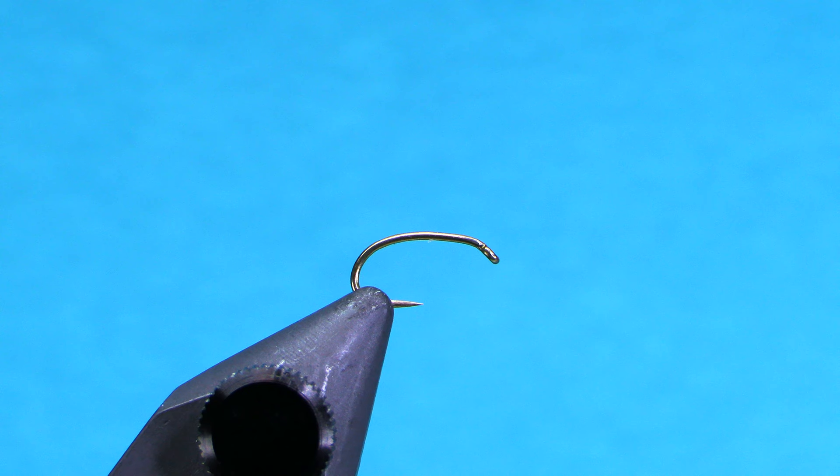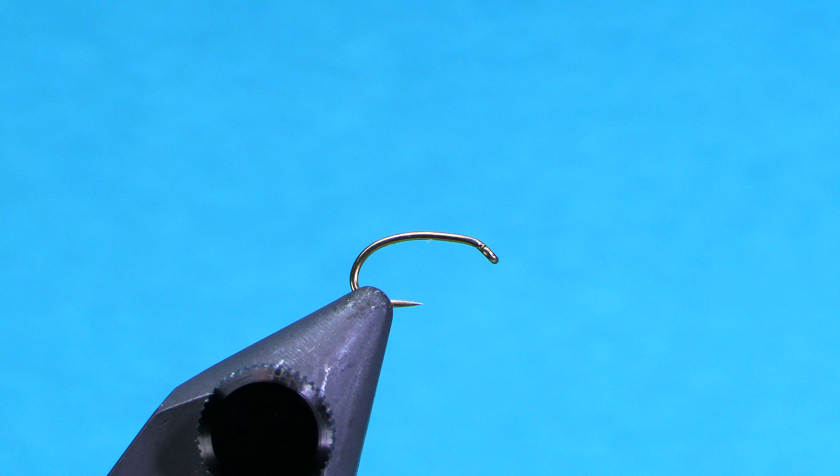Hey, this is Hans from Dakota Angler and Outfitter, and today we're going to tie a fly that I used to use a whole lot more and I'm wondering why I don't use it as much anymore. I'm going to start using it again. It's going to be the WD-40, a super simple pattern that works awesome for a midge larva or a betas nymph pattern, two of which we have in abundance in our stream. So this is a fly that you definitely should have.